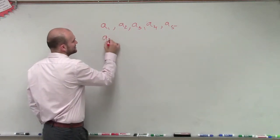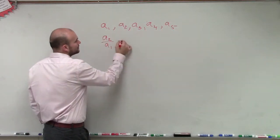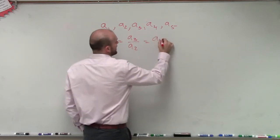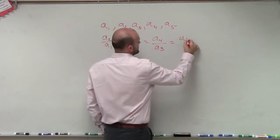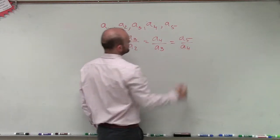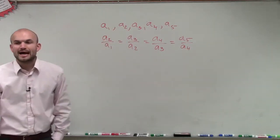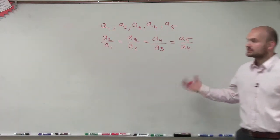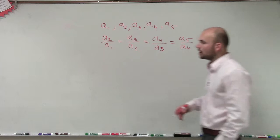So if I do a2 over a1 is equal to a3 over a2, which is equal to a4 over a3, which is equal to a5 over a4. So now, if the ratio of my consecutive terms is going to equal a constant, which we'll call,